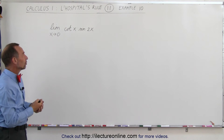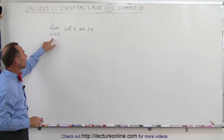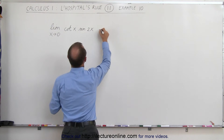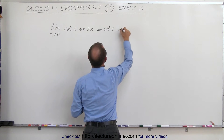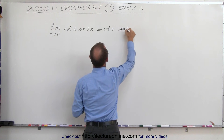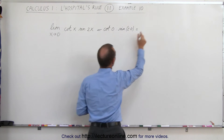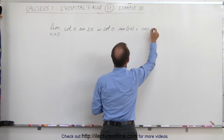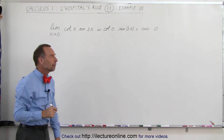It's not even in fractional form, and if we do plug in 0, let's see what we get. When we let x equal 0, this becomes the cotangent of 0 times the sine of 2 times 0. The cotangent of 0 is infinity, and the sine of 2 times 0 is equal to 0. So we have infinity times 0 when we plug in the limit.